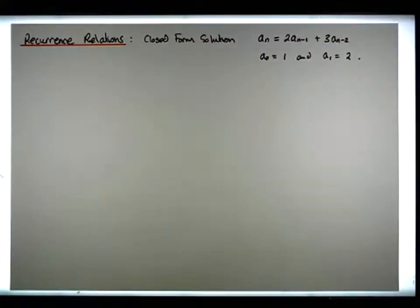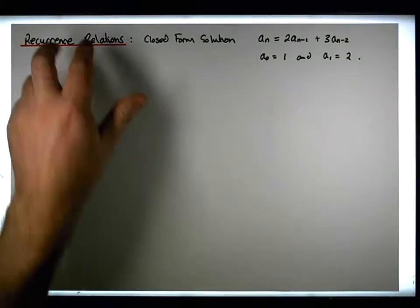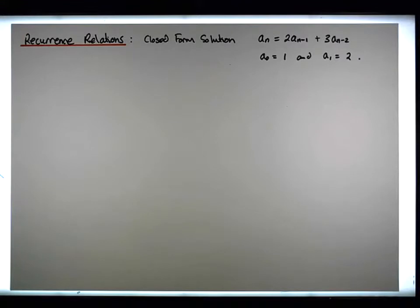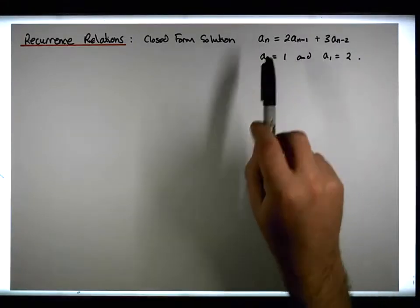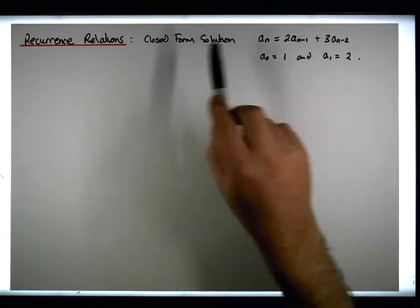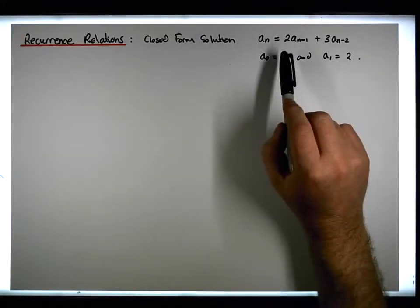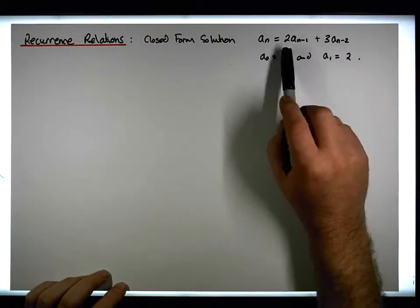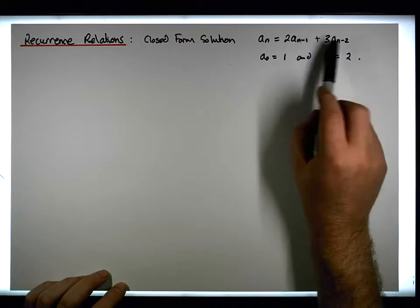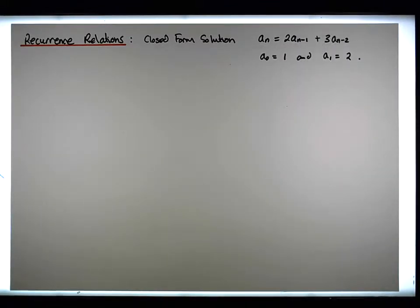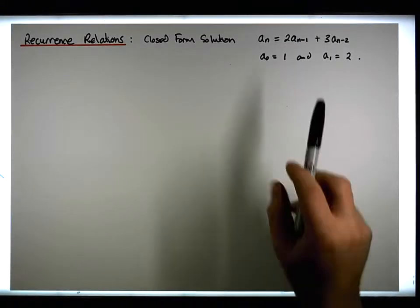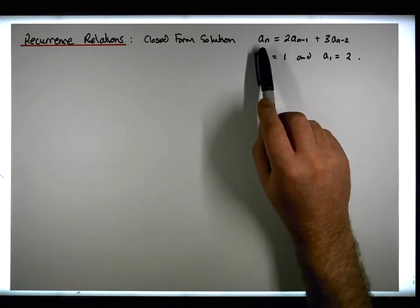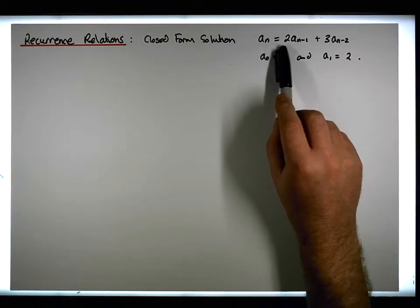Hi guys, this is Jonathan Lambert with Maths and Stats. This video is another in our series dealing with recurrence relations, and is going to concentrate on the closed form solution — how to identify the closed form solution for a linear, homogeneous, degree 2 recurrence relation. The particular recurrence relation we're going to concentrate on looks something like this.